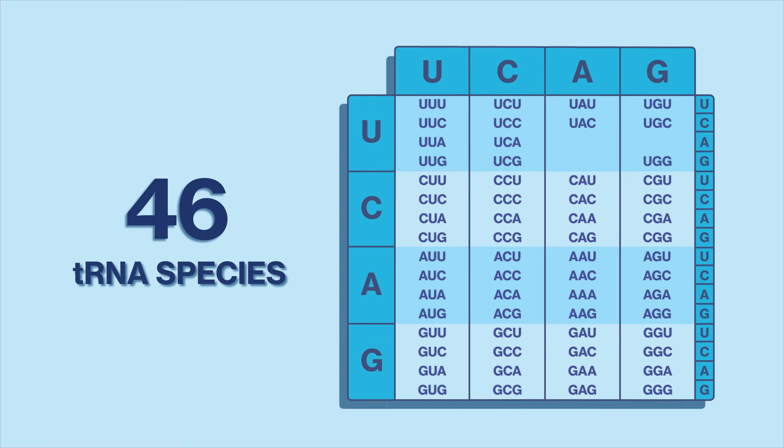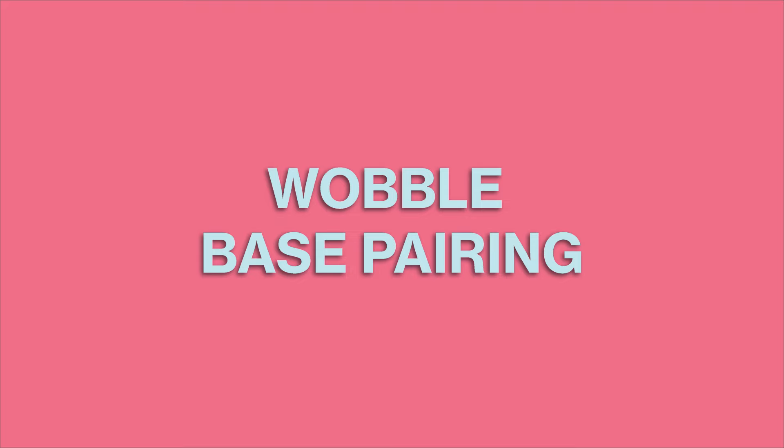In E. coli, there are 46, and in human mitochondria, only 22. Despite lacking the full gamut of tRNA species, these cells still manage to translate the entire genetic code through a phenomenon called wobble-base pairing.